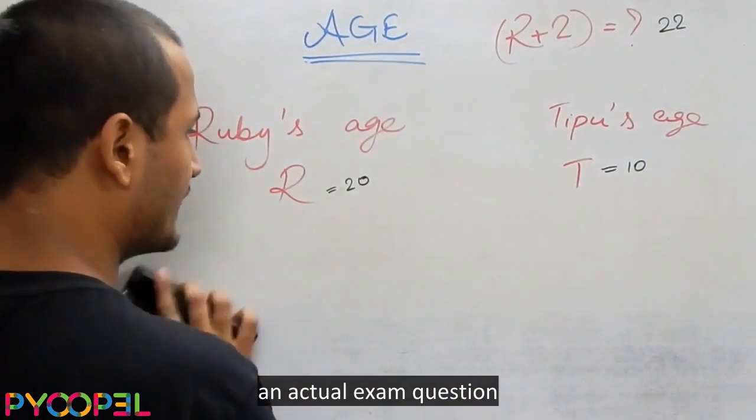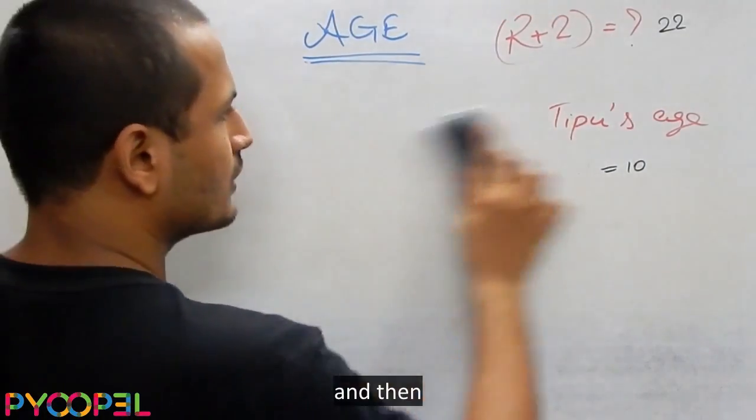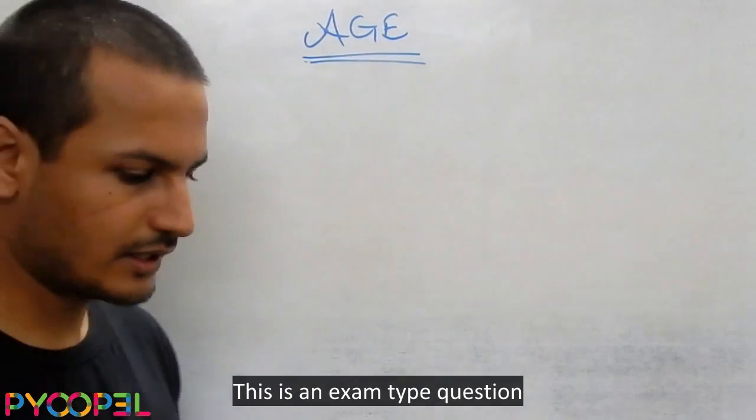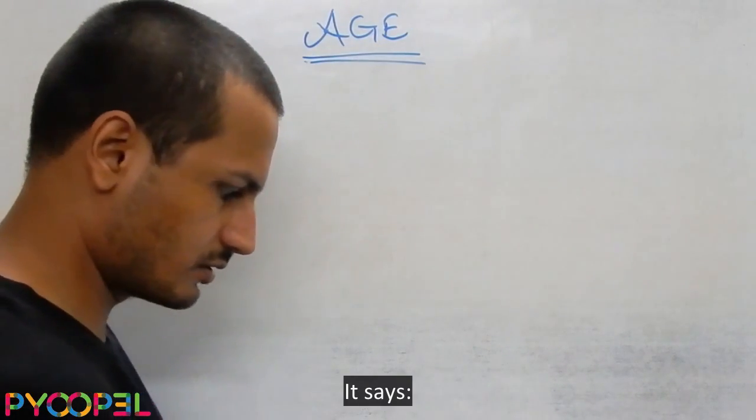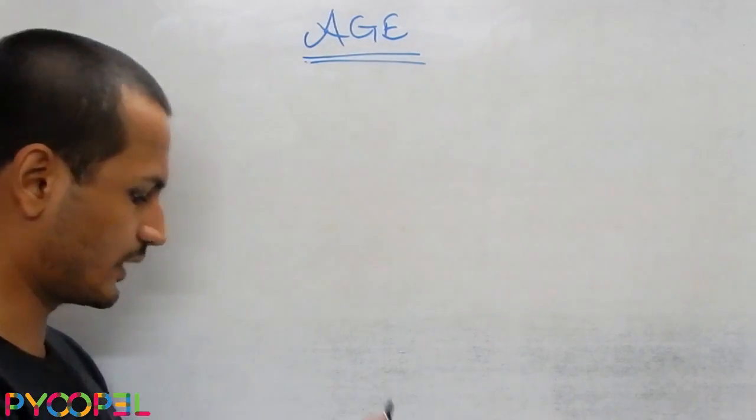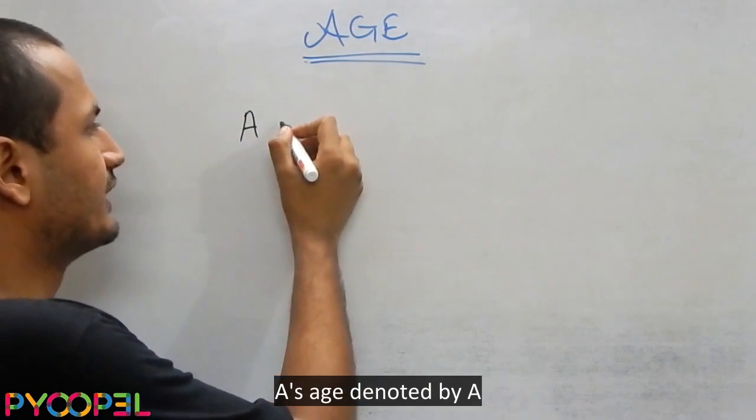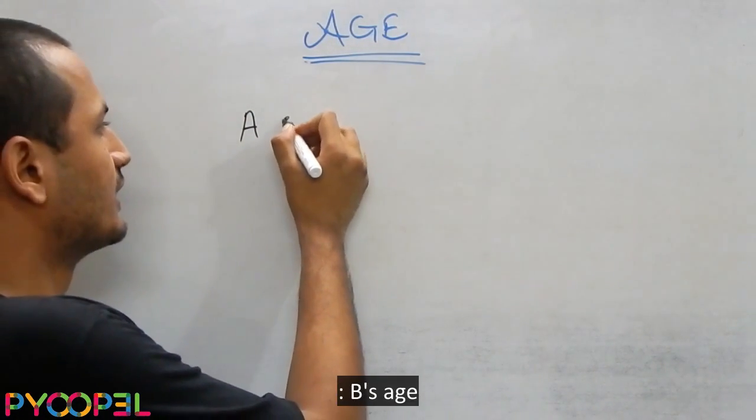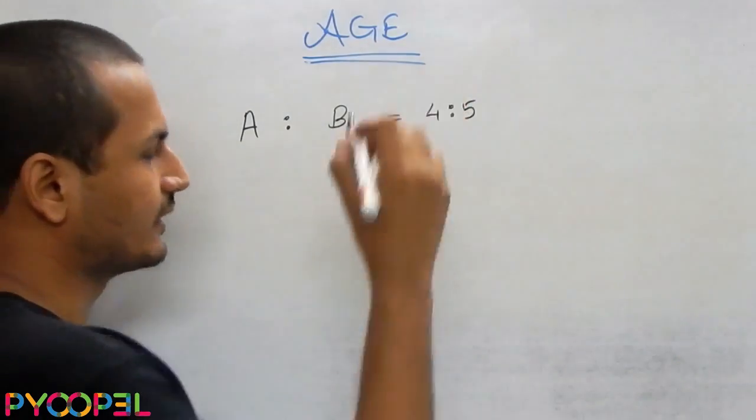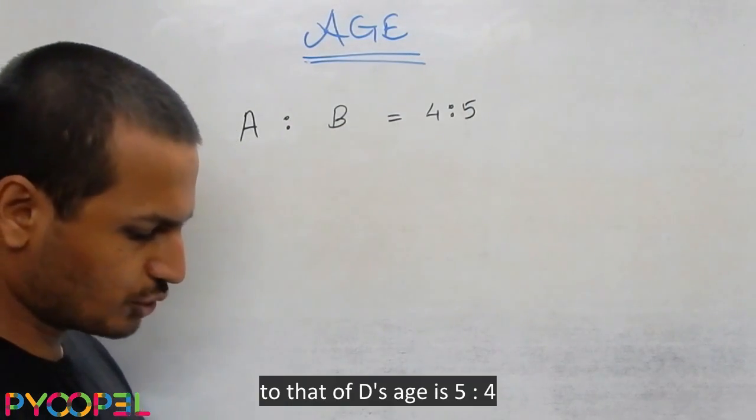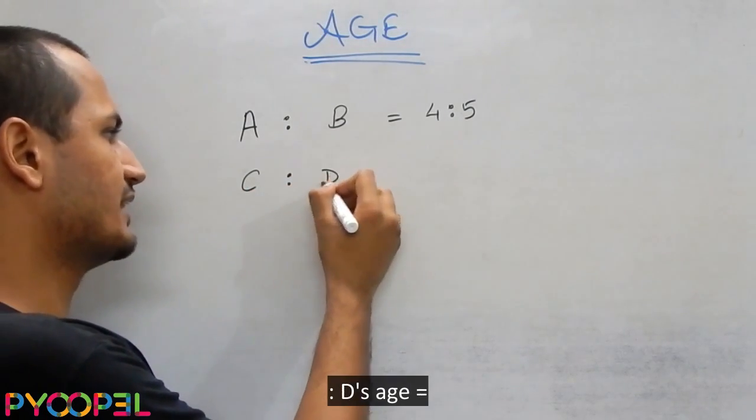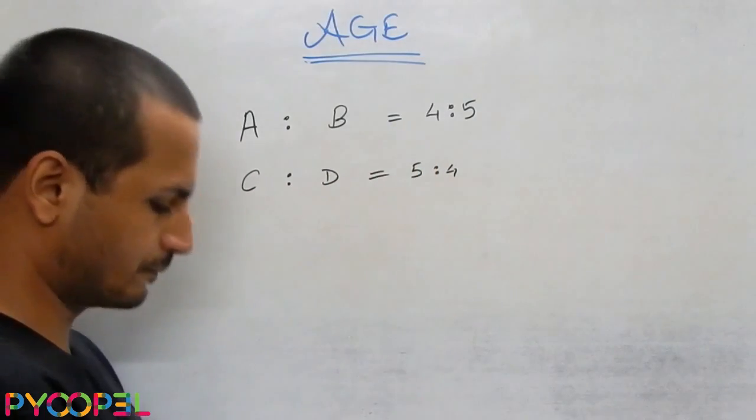Now how about I take an actual exam question and then see how we solve that. This is an exam type question. It says the ratio of A's age to that of B's age is 4 is to 5. A's age denoted by A is to B's age denoted by B is equal to 4 is to 5. The ratio of C's age to that of D's age is 5 is to 4. C's age is to D's age is equal to 5 is to 4.